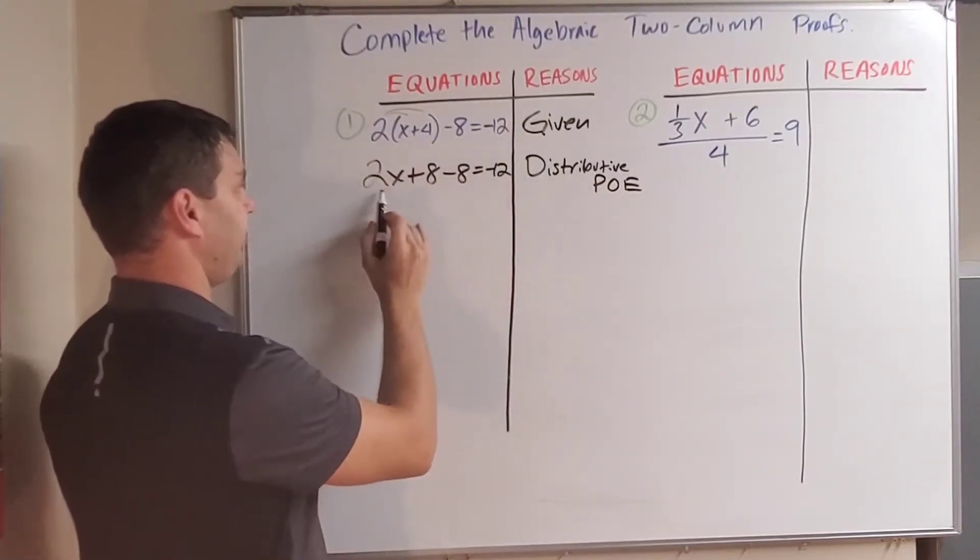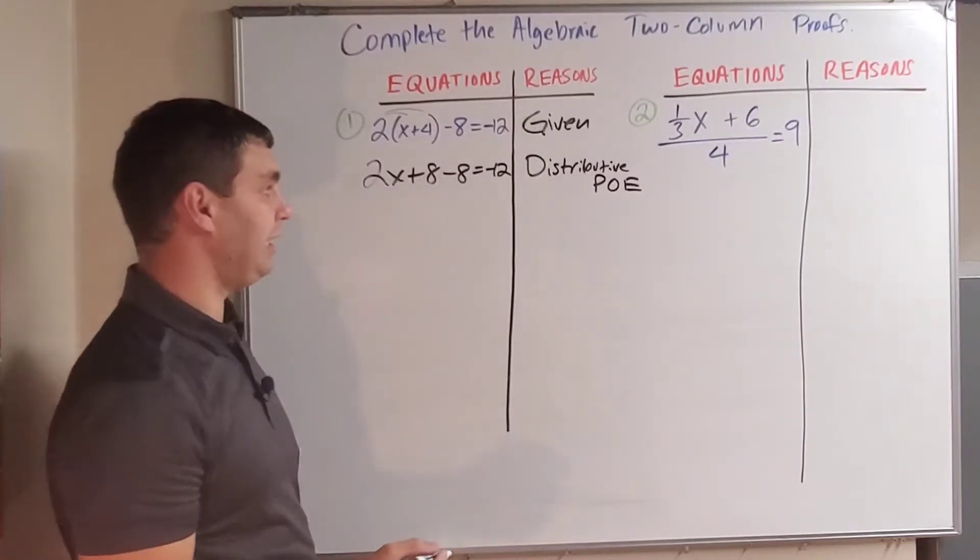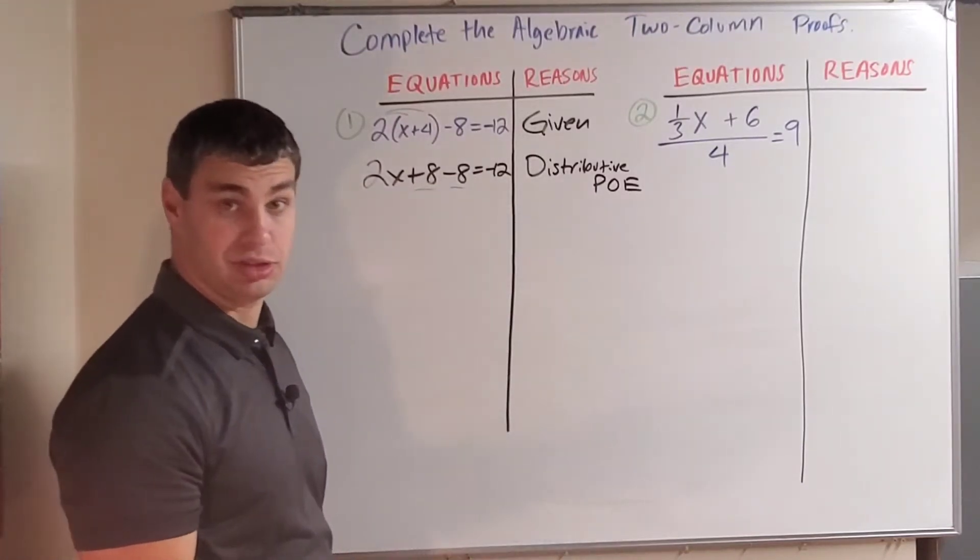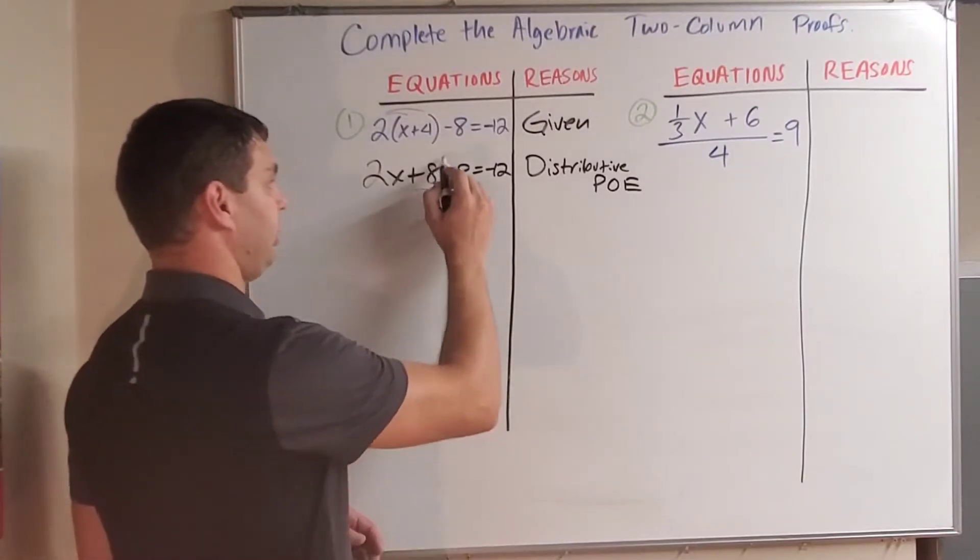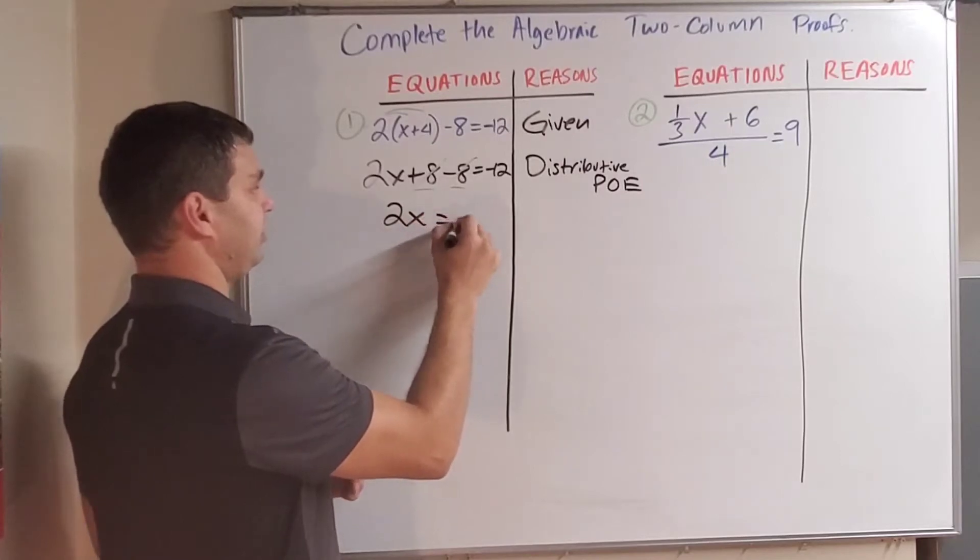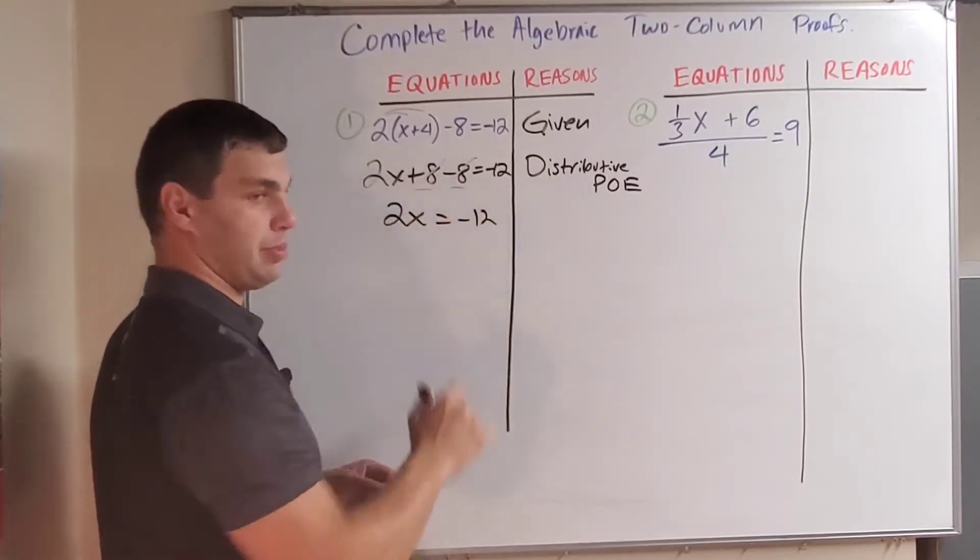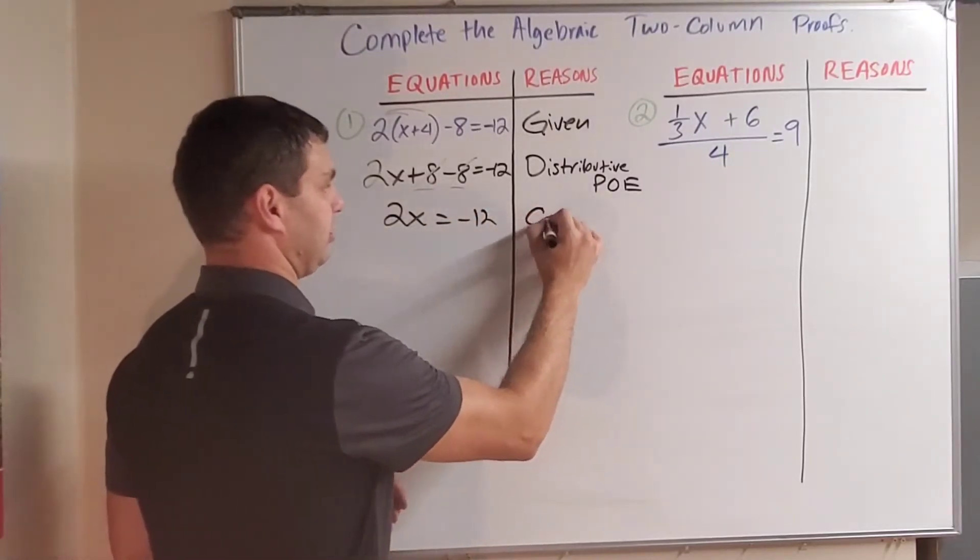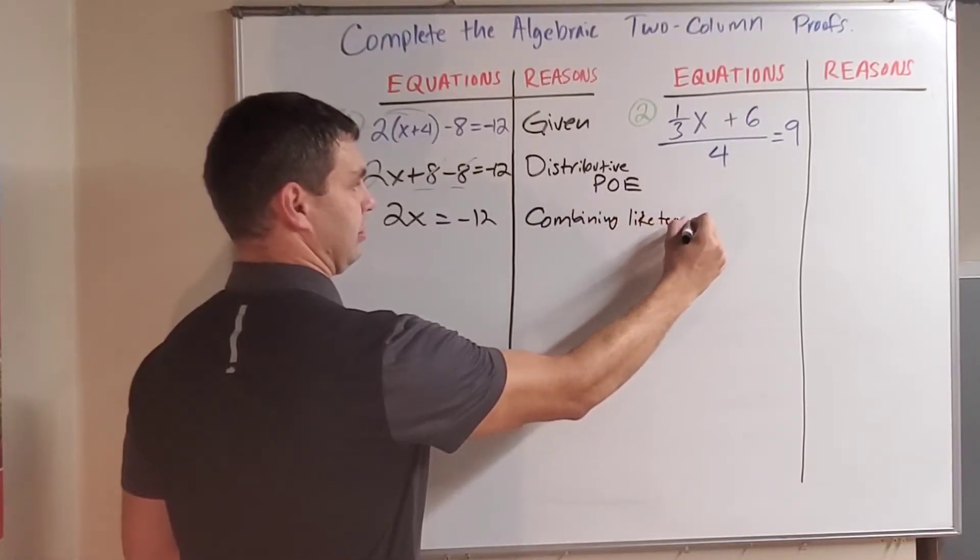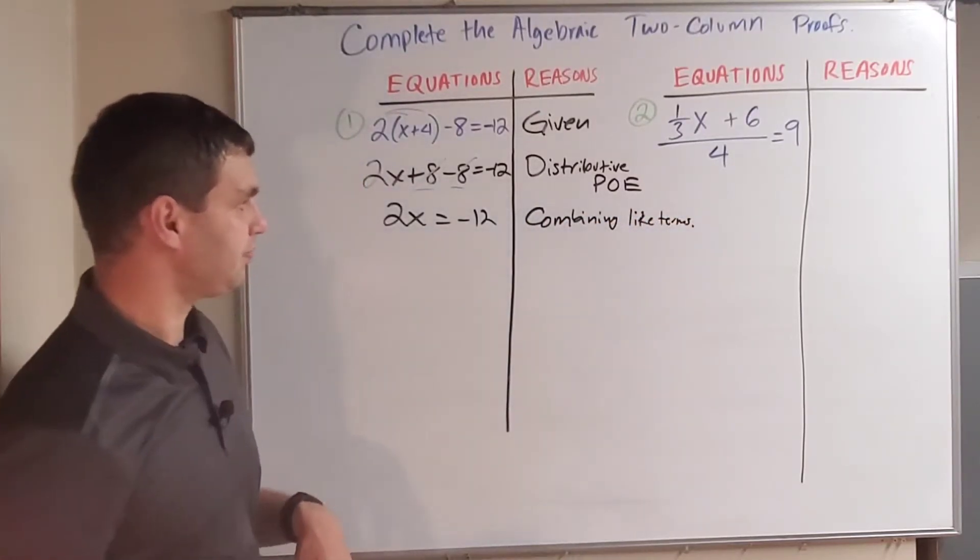Then what do I have? I have 2x + 8 - 8 = -12. Plus 8 minus 8, that's going to cancel because those are like terms. Plus 8 minus 8 is zero. So this is now just 2x = -12 and we did that by combining our like terms. So I'm going to say combining like terms.